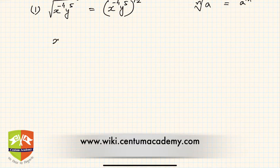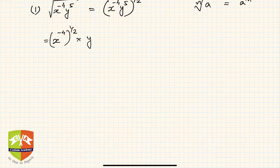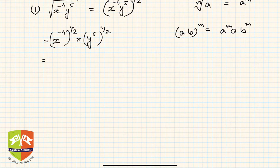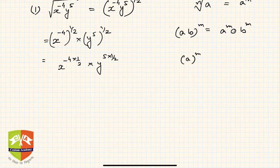The next step: this can be written as x to the power minus 4 raised to the power half, times y to the power 5 raised to the power half. The rule used is: (ab) to the power m equals a to the power m times b to the power m. Then, applying the rule that a to the power m, whole to the power n, equals a to the power m times n, we get x to the power minus 4 times one-half, and y to the power 5 times one-half.